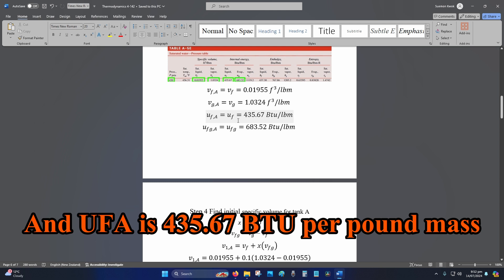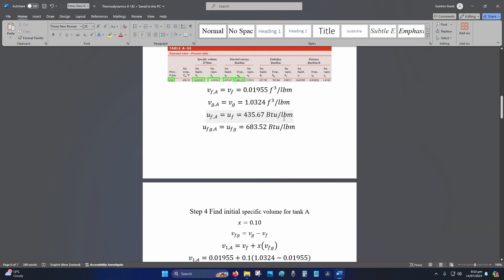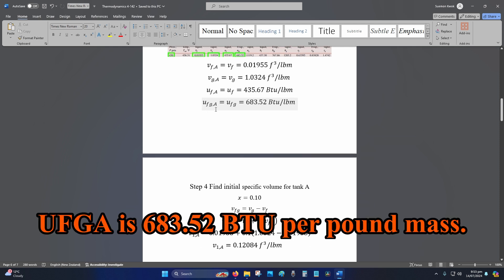And UF A is 435.67 BTU per pound mass, so BTU is the British Thermal Units. LBM is pound mass. UFG A is 683.52 BTU per pound mass.